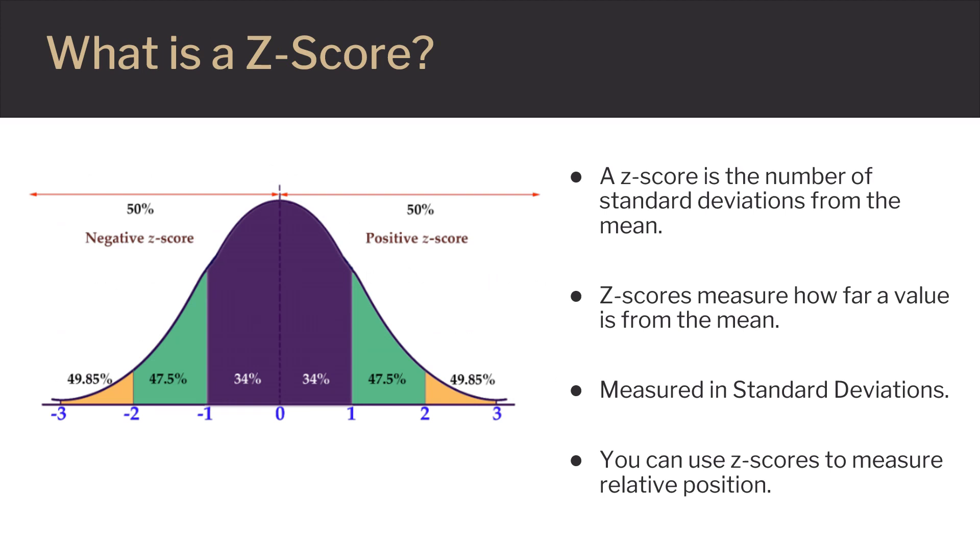So what is a Z-Score? A Z-Score is the number of standard deviations from the mean. Z-Scores measure how far a value is from the mean, measured in standard deviations. You can use Z-Scores to measure relative position.